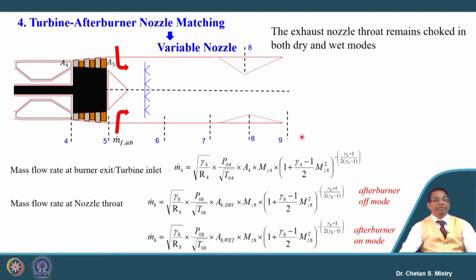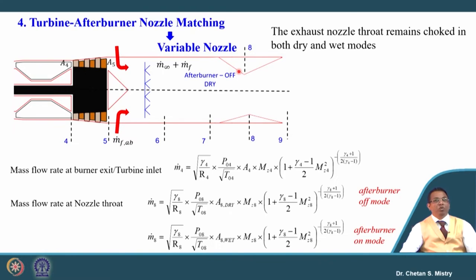Here, this is representing the turbojet engine rear section where we have the afterburner. Under that condition, the upper side represents when my afterburner is under off condition — the dry condition. The amount of air and fuel, or the amount of flue gas coming out from the nozzle, is given by ṁ_f plus ṁ_∞. This nozzle, as discussed, is mainly a convergent-divergent nozzle.